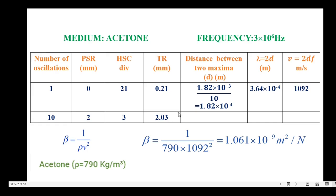Dividing 1.82 by 10 gives the distance d between two maxima. Multiplying by 2 gives lambda. Substituting the lambda value into the velocity expression gives 1092 meters per second — the velocity of ultrasonic waves in acetone. The adiabatic compressibility for acetone is 1.061 times 10 to the power minus 9 square meters per newton.